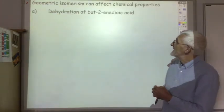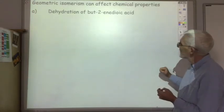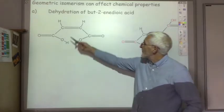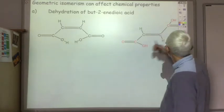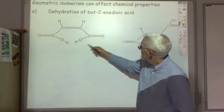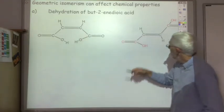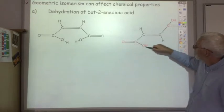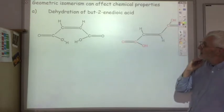A classic example is the dehydration of butenedioic acid. So this is the cis version where the two substituted groups are on the same side of the double bond. Whereas this is the trans version where one group is on one side of the double bond and the other one is on the other side of the double bond.